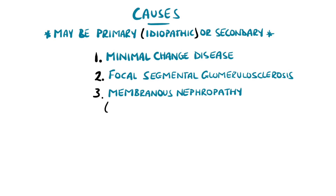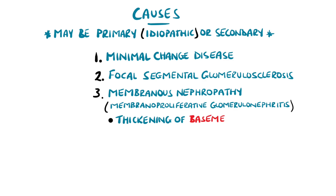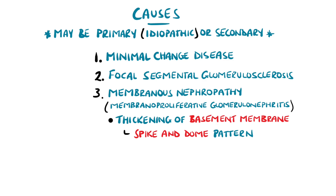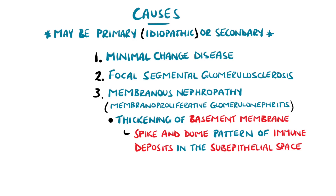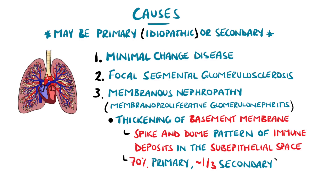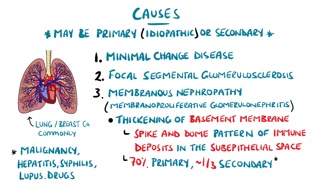Membranous nephropathy is characterised by thickening of the basement membrane, described as having a spike and dome pattern of immune deposits in the sub-epithelial space. Most cases are primary, while one in three are due to secondary causes like malignancy, hepatitis B or C, syphilis, autoimmune conditions like lupus, and drugs such as penicillamine and non-steroidal anti-inflammatories.